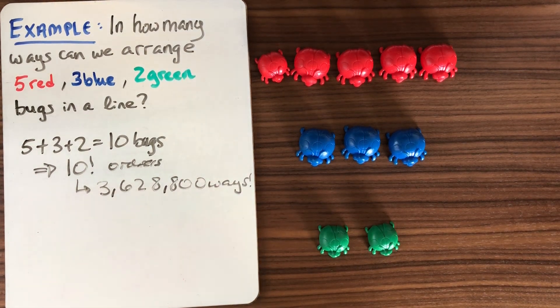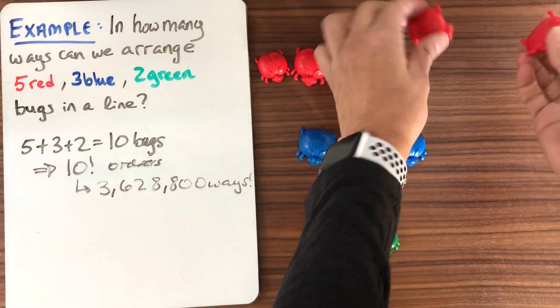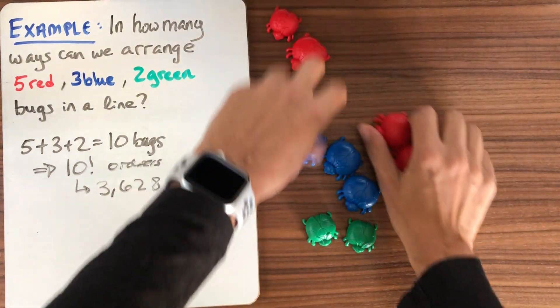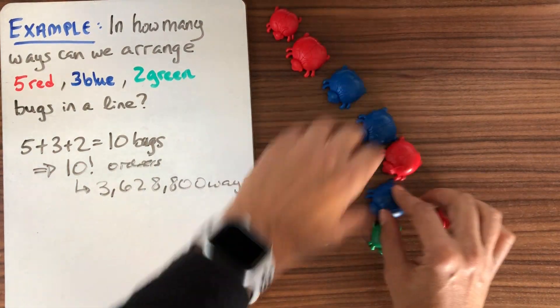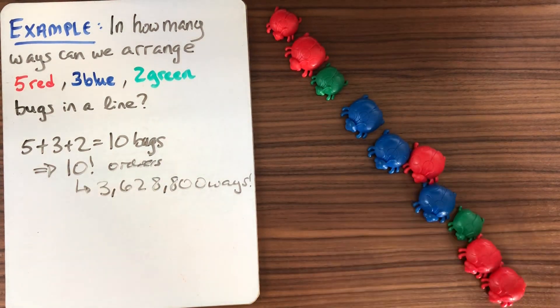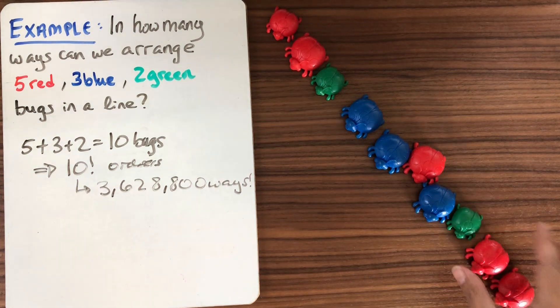The problem with doing this is that that's not actually accurate, right? Because that would assume that these two bugs are different. And when we switch these bugs like this, we haven't changed the order. So if we were to throw these bugs in a line and just sort of line them up, here's a possible linear order for these bugs. This linear order and this linear order are the same.